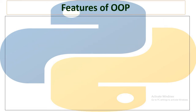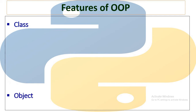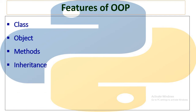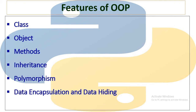Let's discuss about features of object oriented programming. We will see object oriented programming having four features: class, object, methods, inheritance, polymorphism, data encapsulation and data hiding.